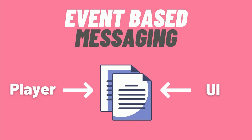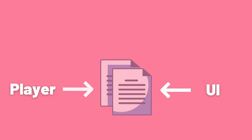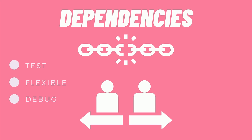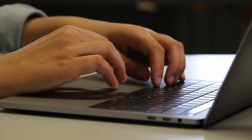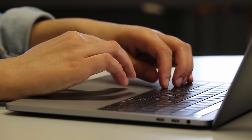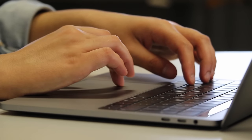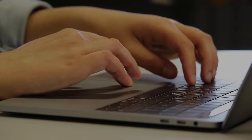Event-based messaging is where the scriptable object kind of acts as a middleman between two different scripts or components, so we can decouple the code, which basically means to separate or to remove dependency onto components. And when you remove dependency, it makes your life easier, makes it easier to test, more flexible, and easier to debug. It's a great way to architect your game to be flexible and easy to change for both coders and designers.